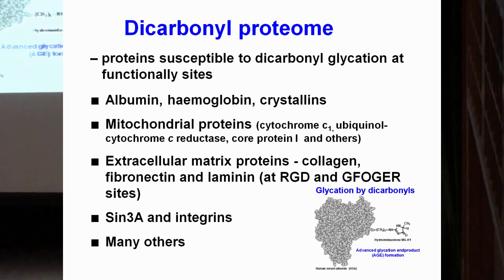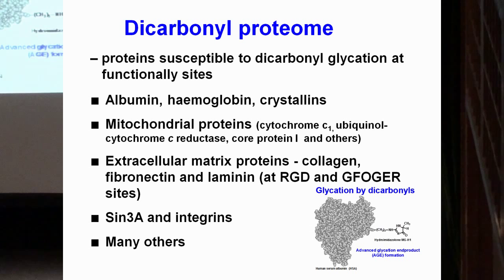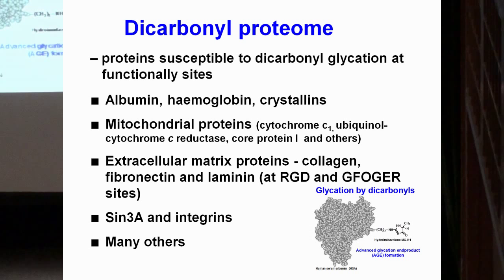We've identified some typical target proteins: albumin, hemoglobin, lens crystallins, mitochondrial proteins. Intriguingly, extracellular matrix proteins — particularly where integrins bind. When the arginine in the integrin-binding RGD and GFOGER sequences is modified by methylglyoxal, integrins can no longer bind and endothelial cells float away and die by detachment-stimulated apoptosis, or anoikis. Increased numbers of circulating endothelial cells are seen in conditions with increased dicarbonyls — such as diabetes, renal failure, and some reports in elderly people as well.